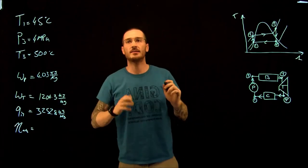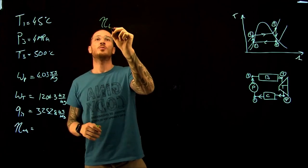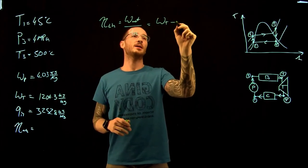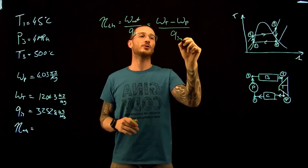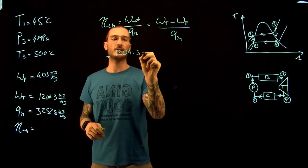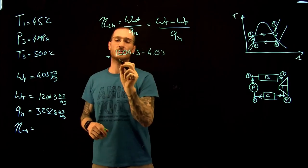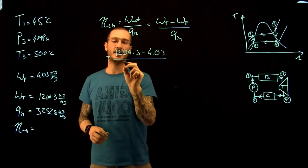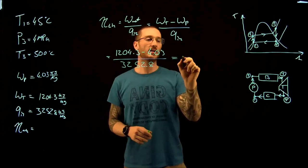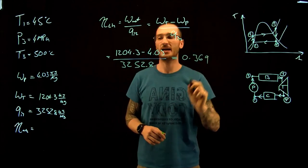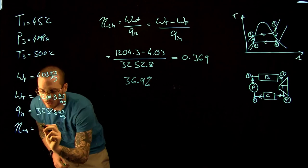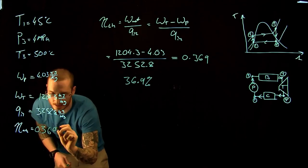We're now ready to calculate the efficiency of our simple Rankine cycle. Efficiency = W_net / Q_in = (W_turbine − W_pump) / Q_in = (1,204.3 − 4.03) / 3,252.8 = 0.369, or 36.9%.